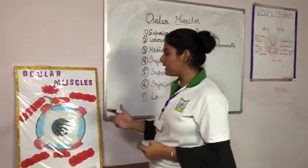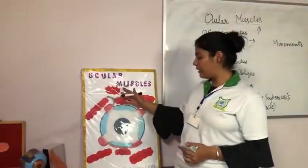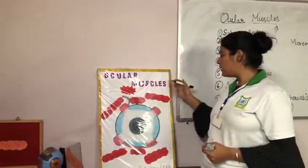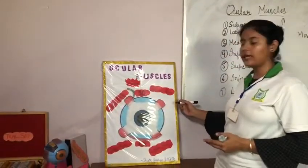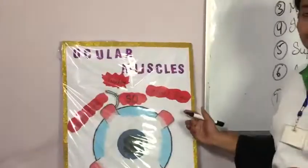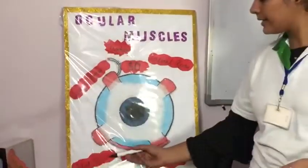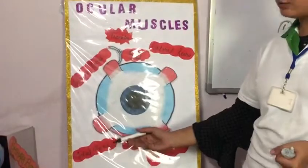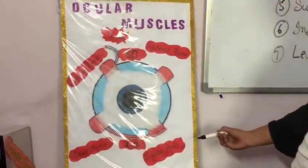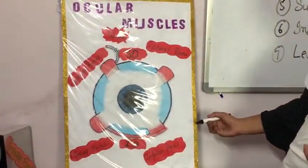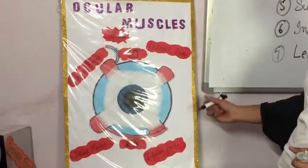The superior rectus helps us to see the eye in an upward direction. The lateral rectus helps the eye in the temporal side. Medial rectus helps the eye to see in the nasal side. The inferior rectus helps us to see the eye in a downward direction.